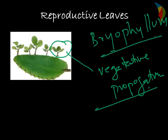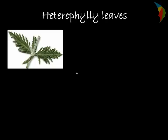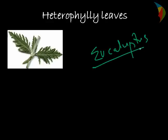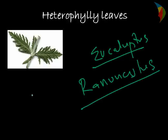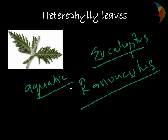The last type of modification is heterophylly leaves. Heterophylly leaves are mostly found in Eucalyptus and in the genus Ranunculus aquatilis. Here the stem bears leaves of different shapes. Aquatic plants also show this, where the stem bears leaves of different shapes depending on their environment.